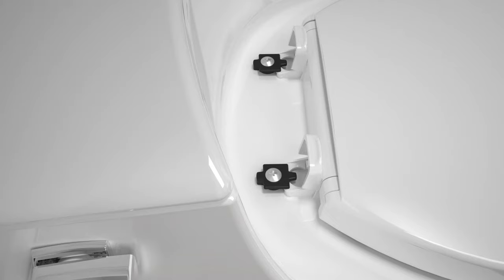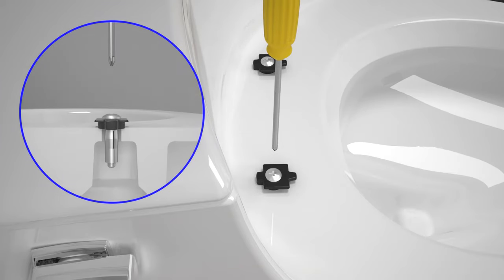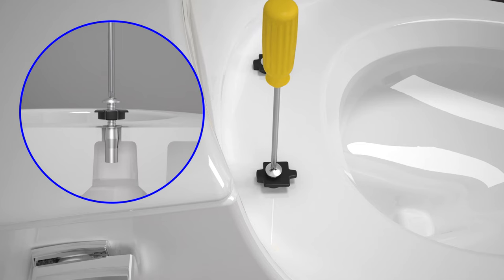If your seat has quick-release hinges, remove the toilet seat before proceeding. Using a Phillips screwdriver, unthread the bolts holding the toilet seat in place.